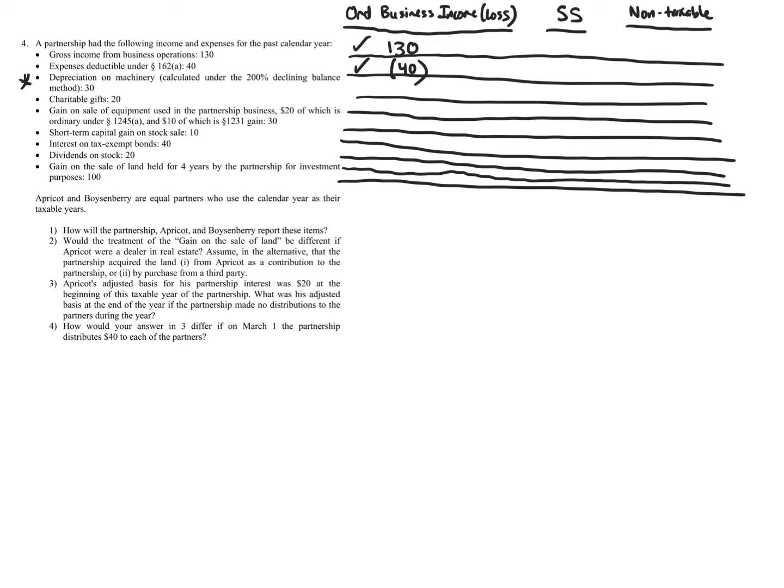Because any possible owner could face a different limitation, charitable gifts of $20 are a separately stated item. Interestingly, under Section 703, charitable contributions are considered non-deductible at the partnership level — the partnership doesn't take the deduction. The partners are the ones who get the benefit, so the $20 flows out to them separately.